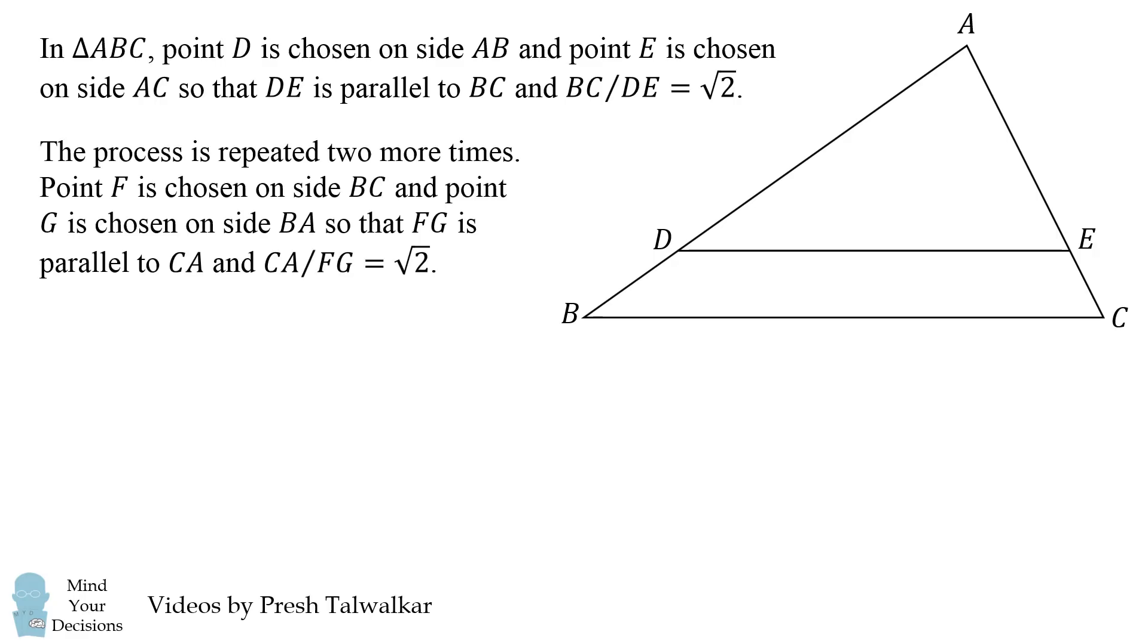The process is repeated two more times. Point F is chosen on side BC and point G is chosen on side BA so that FG is parallel to CA, and CA divided by FG is equal to the square root of 2.